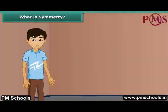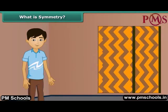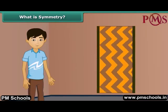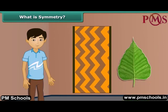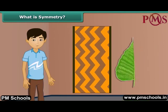Children, look at the rug. When you fold it, the left and right halves match each other. Thus, the rug is said to be symmetrical. Look at this leaf — on folding the leaf, its two halves match each other, thus it is symmetrical.